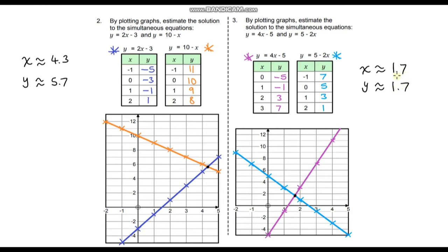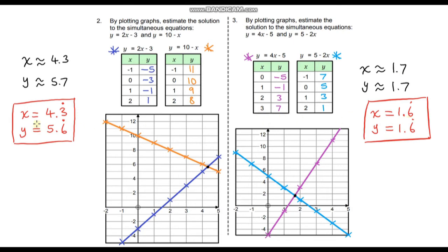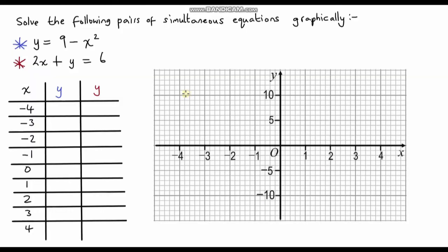Now let's check the answers. Here are the exact solutions for these pairs of simultaneous equations, and I'm quite happy with my answers — I'm actually less than 0.1 off. In exams you are given a margin for error, so for this particular question you'll probably be allowed about 0.2 either side of the correct answer. Right, there's one more question and this time we're going to solve simultaneous equations graphically where one of them is a quadratic.